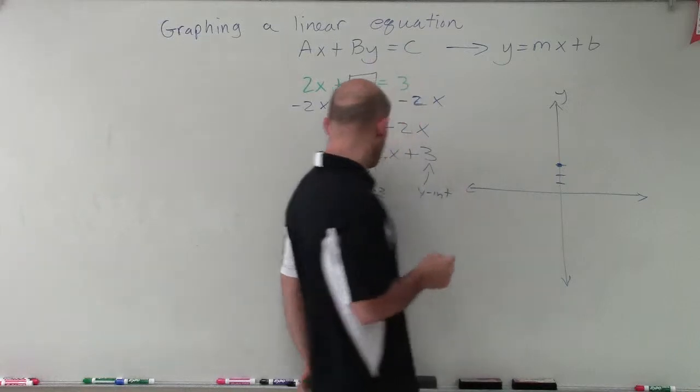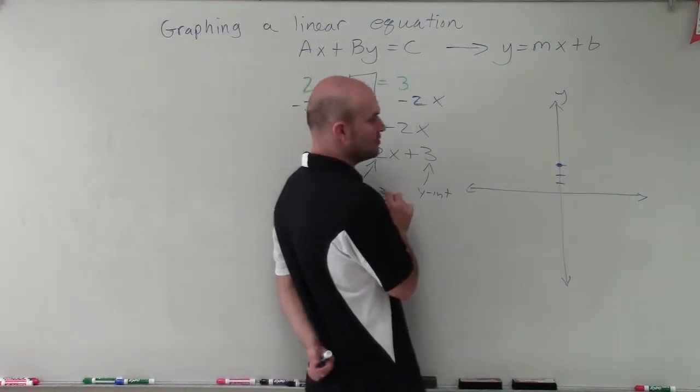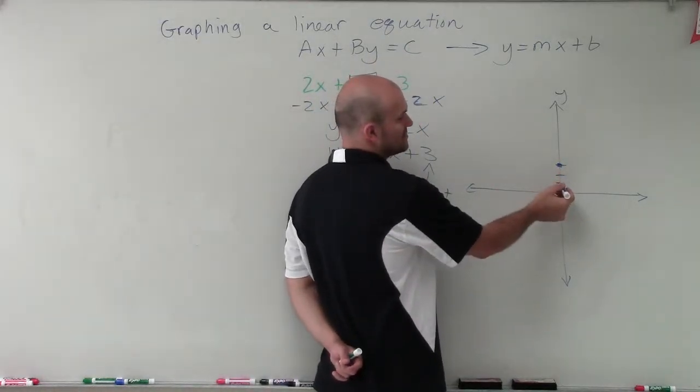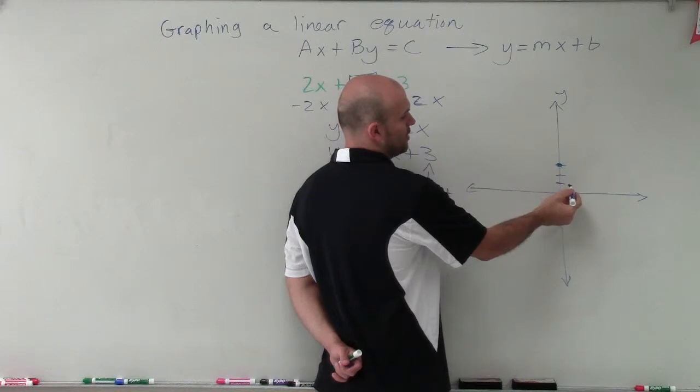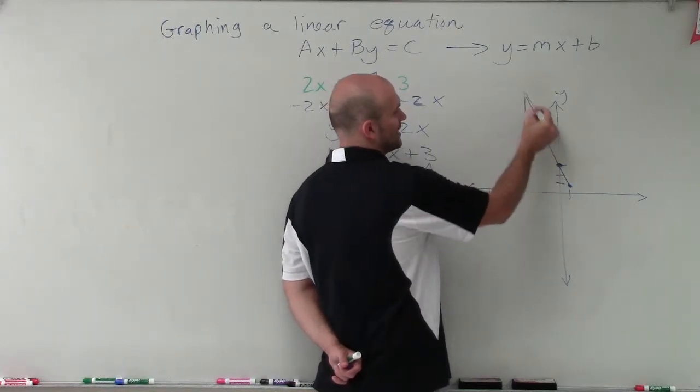Then, since my slope is negative 2 over 1, the change in y is negative 2. So I'm going to go down 2 and then to the right 1. Now I have my two points. I can graph my line.